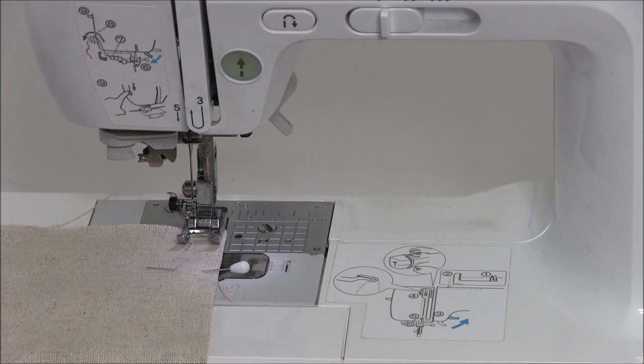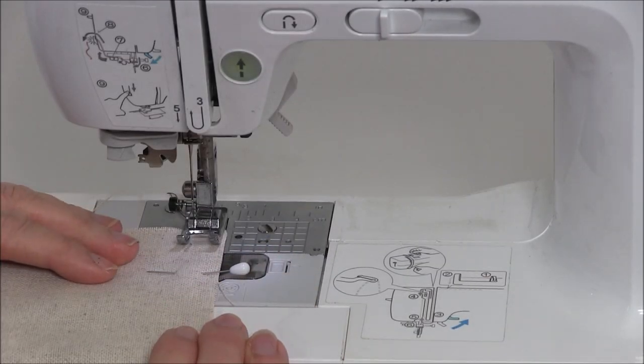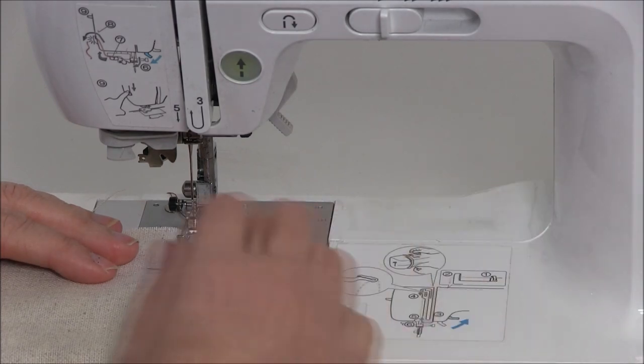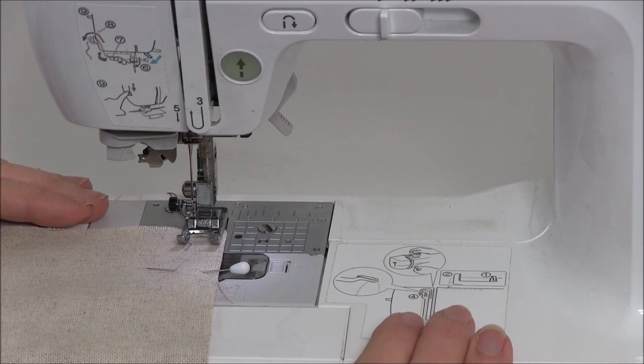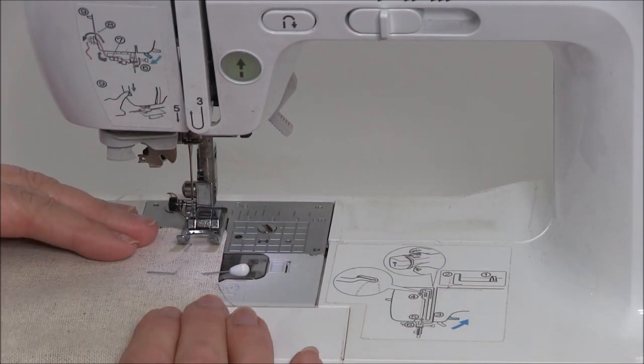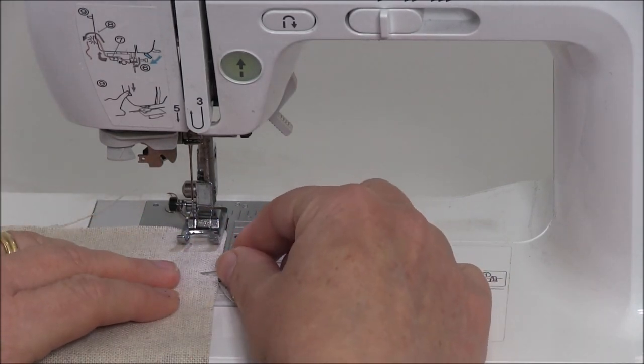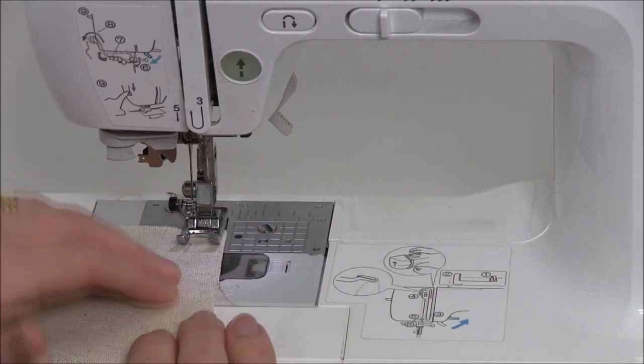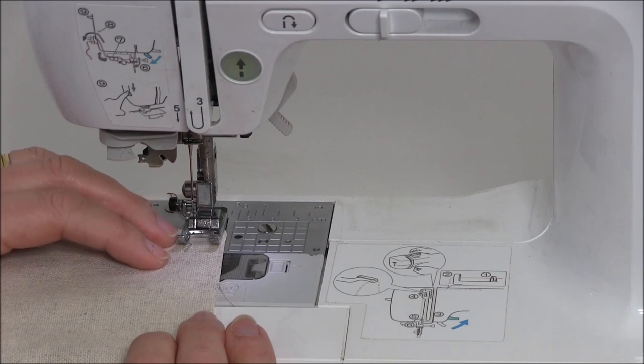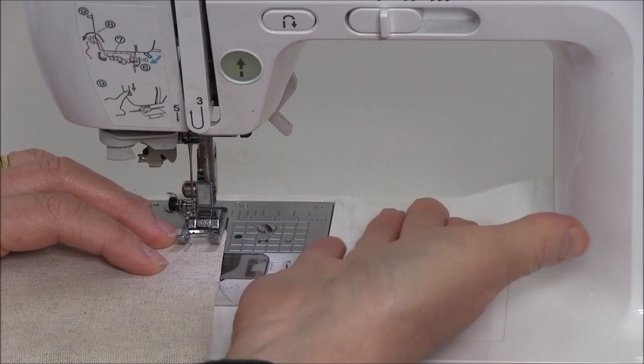That will just lock everything into place and help your feed dogs do the work. If you've used the default settings for your machine and chosen the stitch, once you start stitching that will make sure your seam allowance is accurate. Remember we want to take pins out; we do not want to sew over pins. You will break a needle. The first thing we want to do is sew forward a couple of stitches—it's called a back tack.